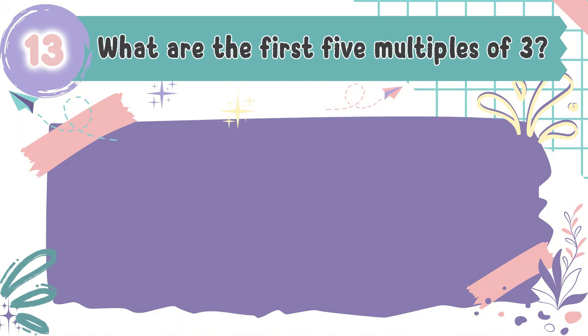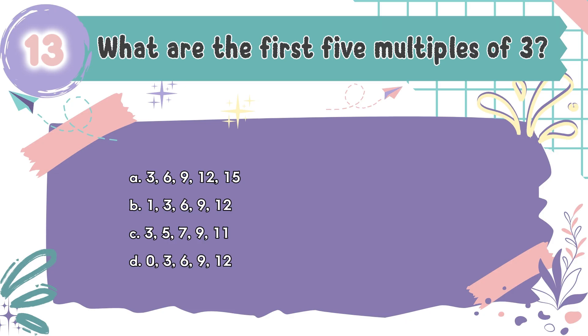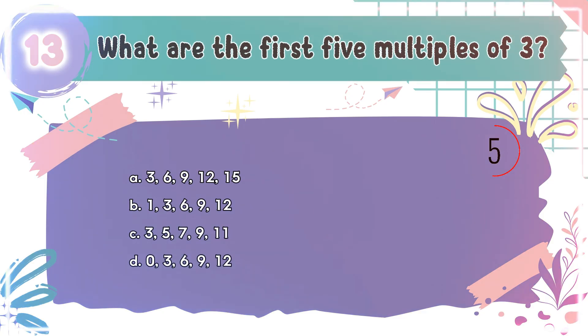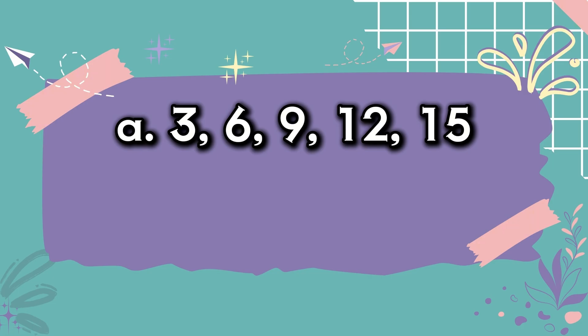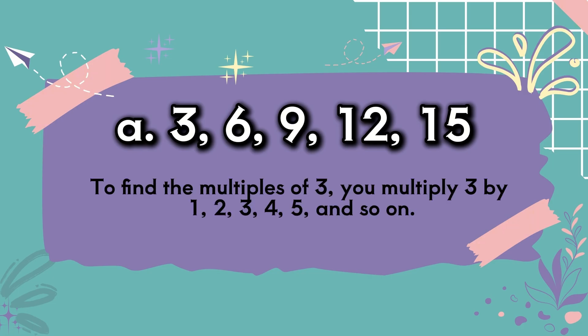Question number 13: What are the first 5 multiples of 3? The choices are A: 3, 6, 9, 12, 15; B: 1, 3, 6, 9, 12; C: 3, 5, 7, 9, 11; D: 0, 3, 6, 9, 12. The correct answer is A: 3, 6, 9, 12, 15. To find the multiples of 3, you multiply 3 by 1, 2, 3, 4, 5, and so on.